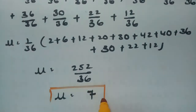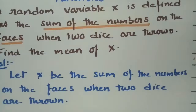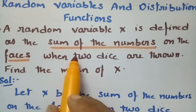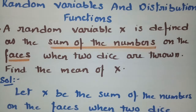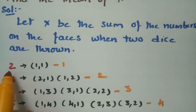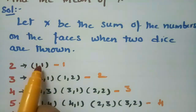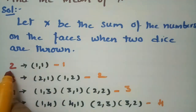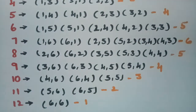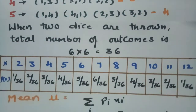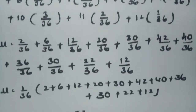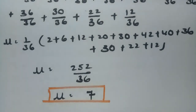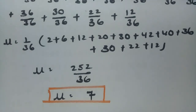The mean value is 7. To recap: a random variable x is defined as the sum of the numbers on the faces when two dice are thrown. We listed all possibilities, built the distribution table, and applied the mean formula to get 7. Thank you so much for watching. Please subscribe to this channel and share it with your friends.